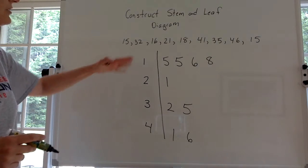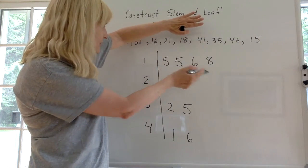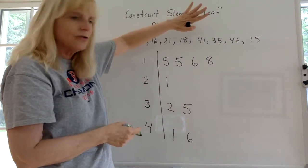Now you can reconstruct the data. If you didn't have that data, you just have the diagram, you could reconstruct the data. There's a 15, there's a 15, there's a 16, there's an 18, there's a 21. You could just go through it.